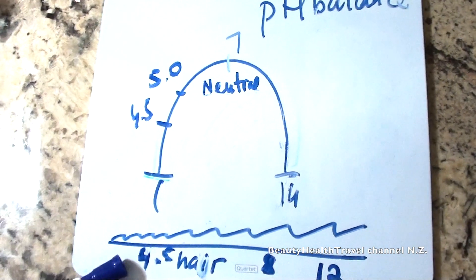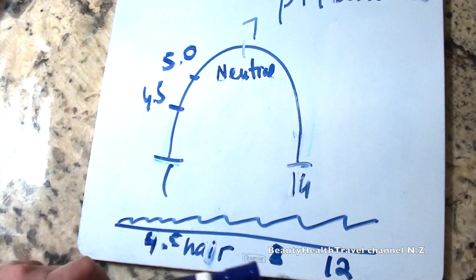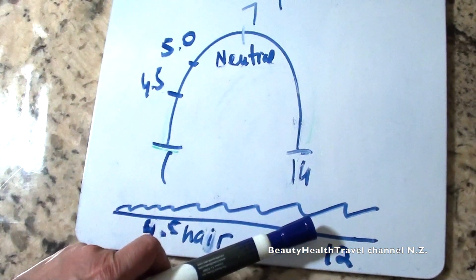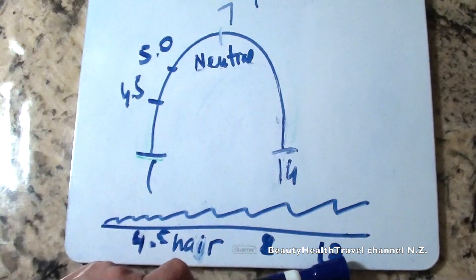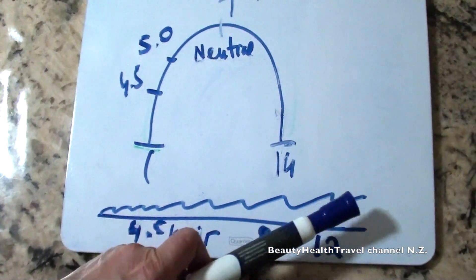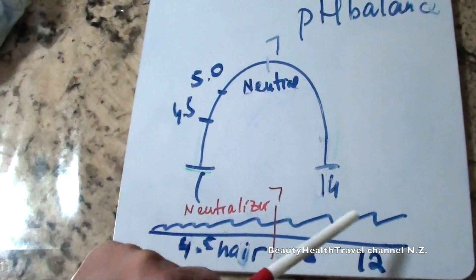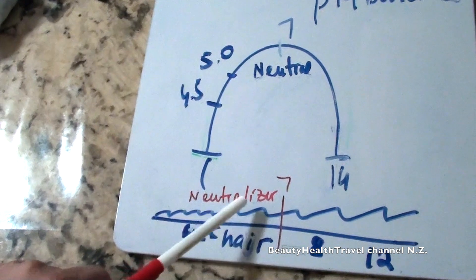So the hair, when it's 4.5, the cuticles are closed. And then it goes to 8 to 10, which is the thio. The cuticle is more open and expanded. When it goes to 12, which is sodium hydroxide relaxer, it's completely blown open. So to bring the hair from this position to this state, you need a neutralizer.